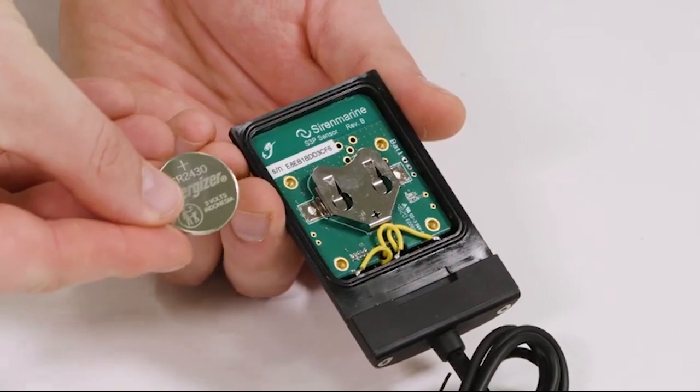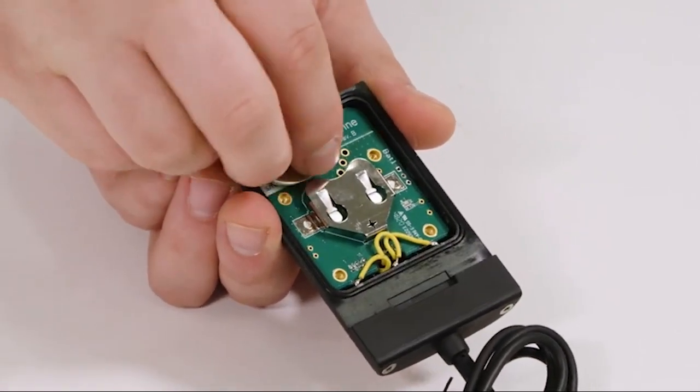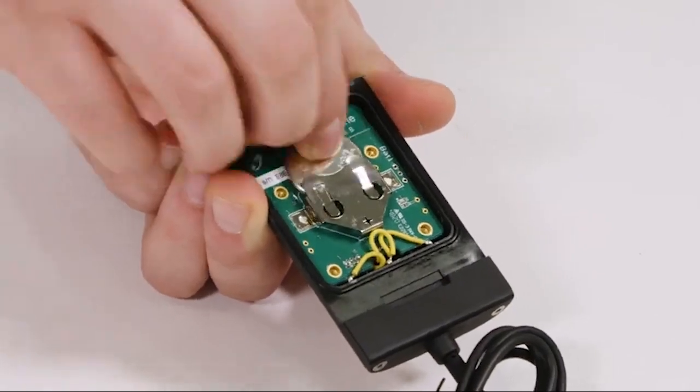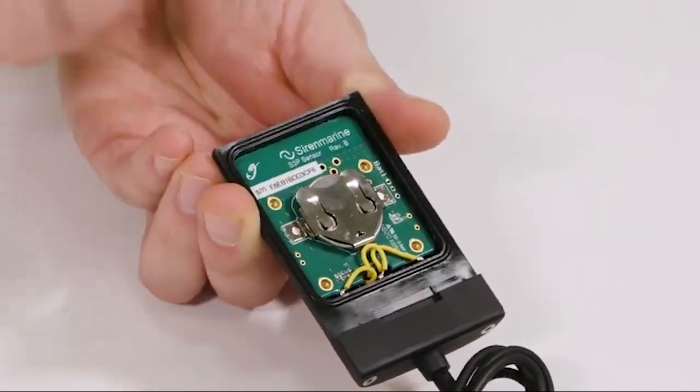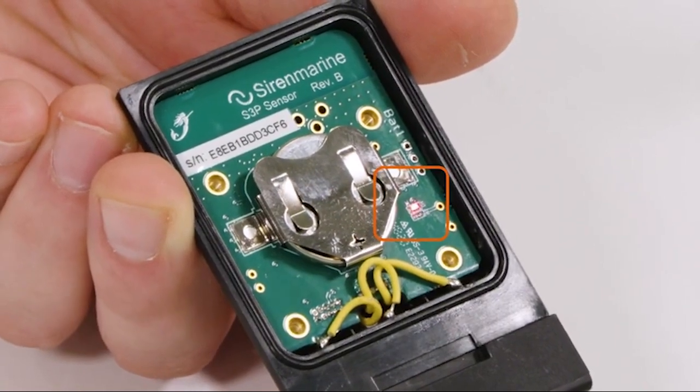Take the coin cell battery with the positive side facing out and insert it into the cradle. A light on the circuit board will flash four times indicating power.